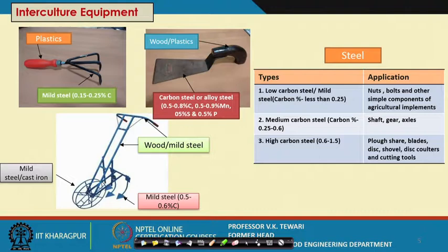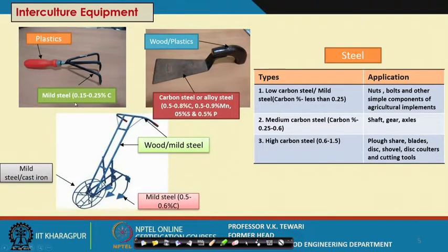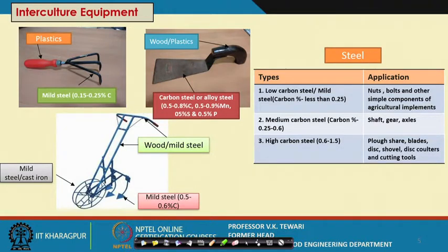The next operation in crop production is interculture. For a kurpa or weeding tool used in interculture, handles are often wood or plastic, but the blades, tines, or working parts that interact with weeds are mild steel with 0.15 to 0.25 percent carbon. For the kurpa used in manual operation, carbon steel or alloy steels are used because the edges must have a certain sharpness, comprising 0.5 to 0.8 percent carbon, 0.5 to 0.9 percent manganese, 0.5 percent sulfur, and 0.5 percent phosphorus.